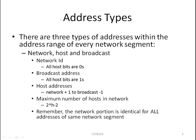The three address types that we find within the range of any or every network segment are the network, host, and broadcast address. Both the network and broadcast addresses are special addresses and they are never assigned to hosts. You calculate the network address by setting all host bits to zeros. The broadcast address is calculated by setting all host bits to one.